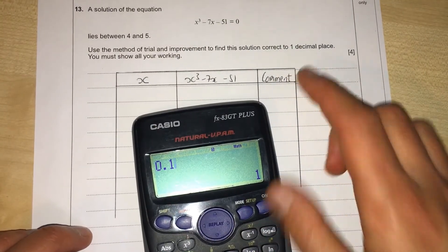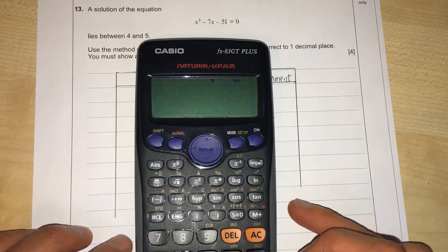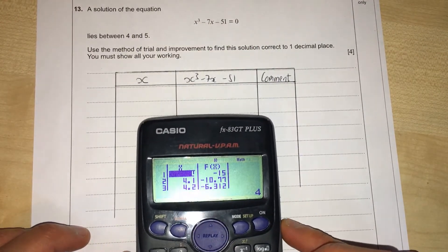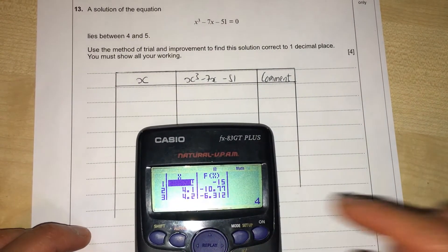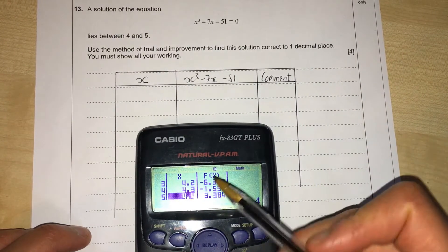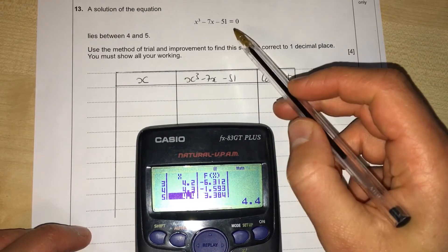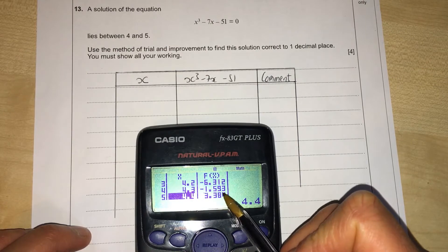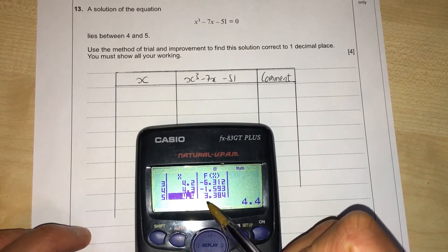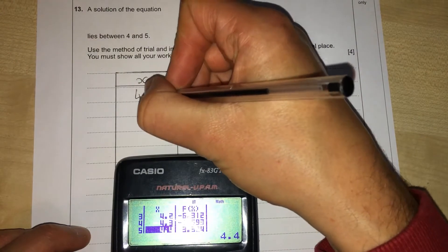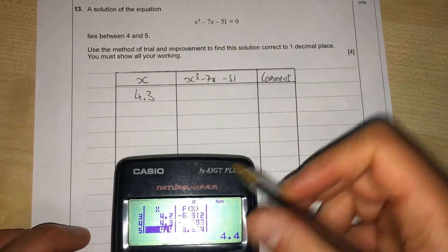When I press equals it gives me a table of results. Rather than inputting each one individually, I can scan through this until here it is. We're trying to get an answer of zero, and here we go from -1.593 to positive 3.384, and that happens when X is 4.3.